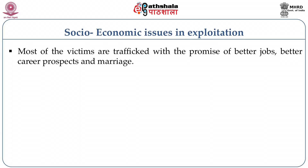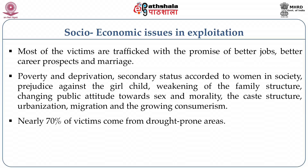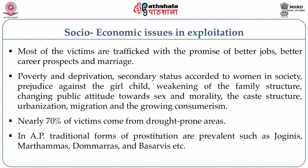Many trafficked victims are lured with the promise of better jobs, better career prospects, and marriage. Poverty and deprivation in many regions, the secondary status accorded to women, prejudice against the girl child, weakening family structures, changes in public attitude towards sex and morality, the class structure, urbanization, migration, and growing consumerism are some of the factors responsible for increase in trafficking. Studies show 70% of victims come from drought-prone areas. Added to this are traditional forms of prostitution in areas like Andhra Pradesh and Telangana, where you have Jogans, Matharammas, Doma Rammas, and Basavis.